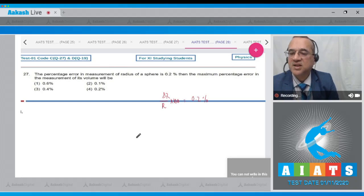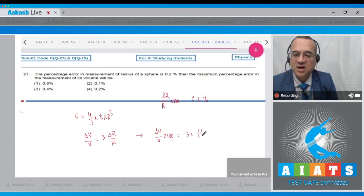Maximum percentage in the volume - we have to find the relation between volume of the sphere and its radius and do the error analysis. Delta v by v is equal to the constant calculated delta r by r. Or delta v by v into 100 is equal to 3 times delta r by r into 100, and this is given equal to 0.2 percent. So we will fill the value, this is 3 into 0.2 percent, and this becomes 0.6 percent.